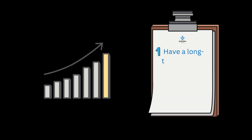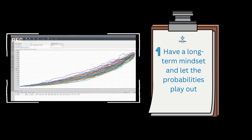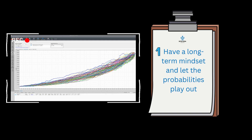First of all, we're going to go through the do's. Number one: have a long-term mindset and let the probabilities play out. What I mean by this is if we go back to our results video, you might remember this graph. This is called a Monte Carlo analysis where we run 100 or more than 100 different simulations to see what the final outcome would be. And if we do remember, over a thousand trades, every single graph is slightly different.